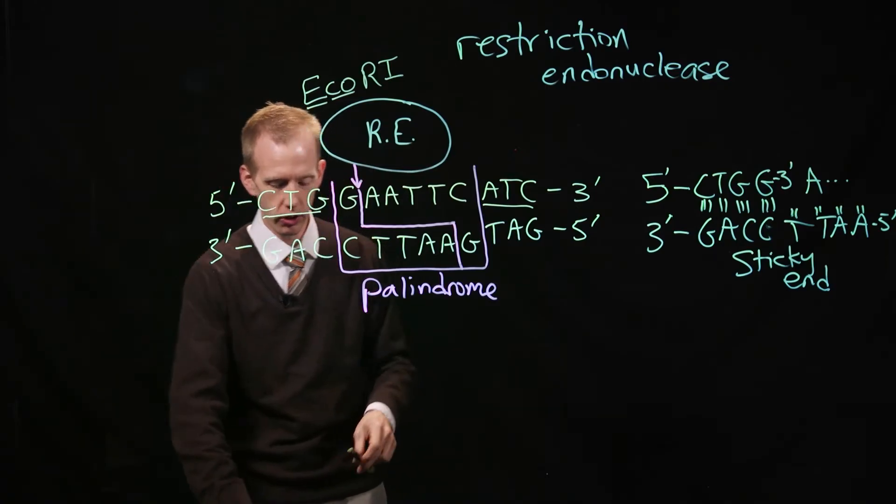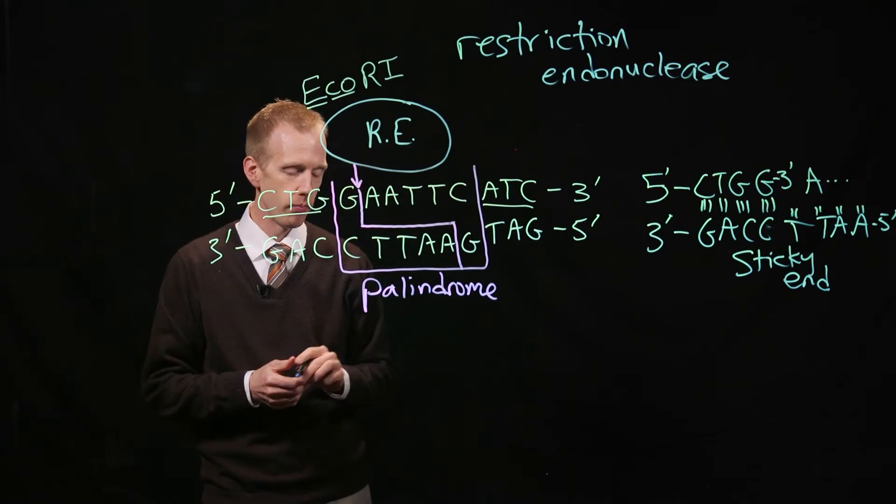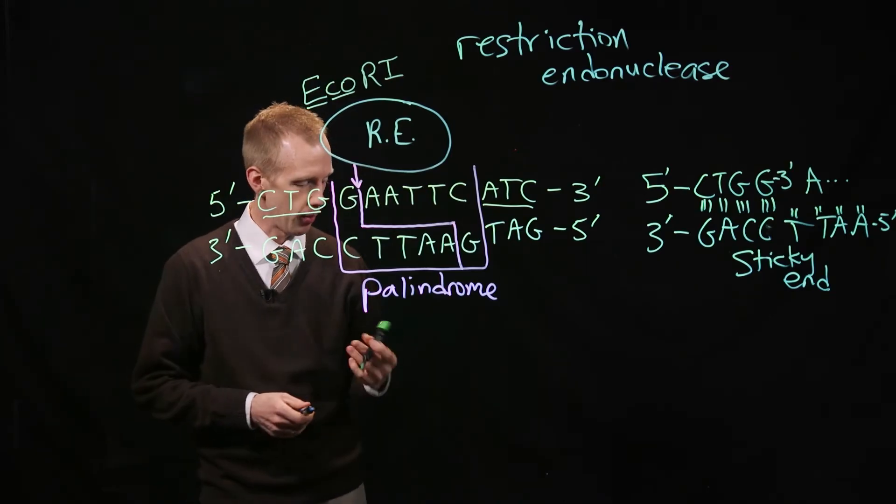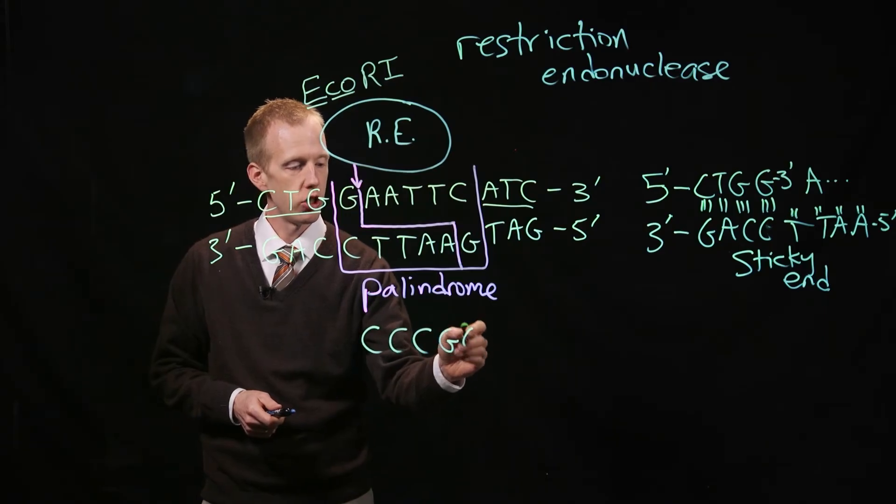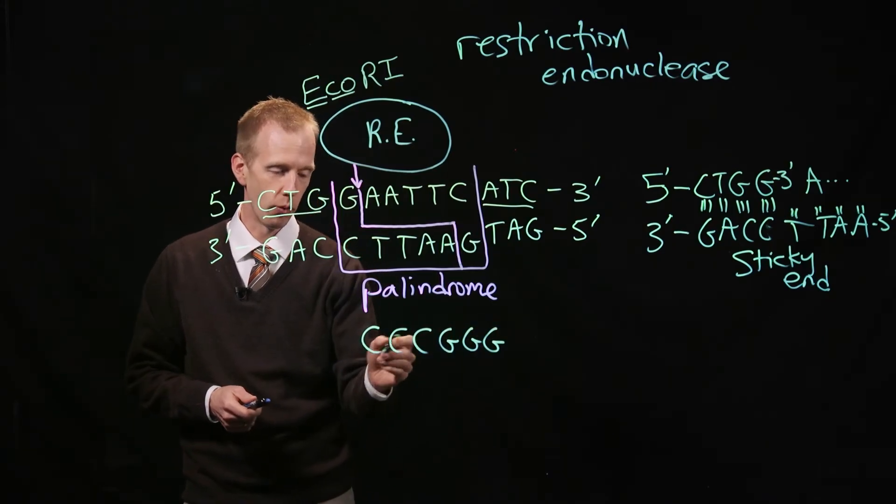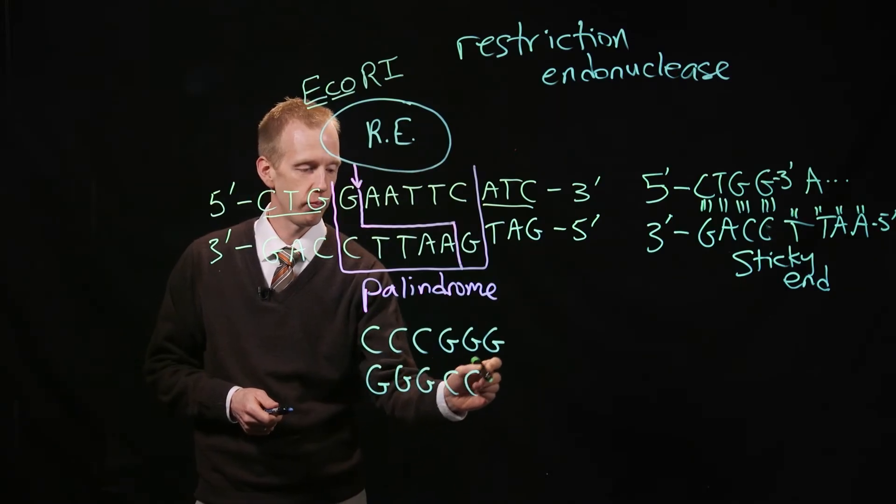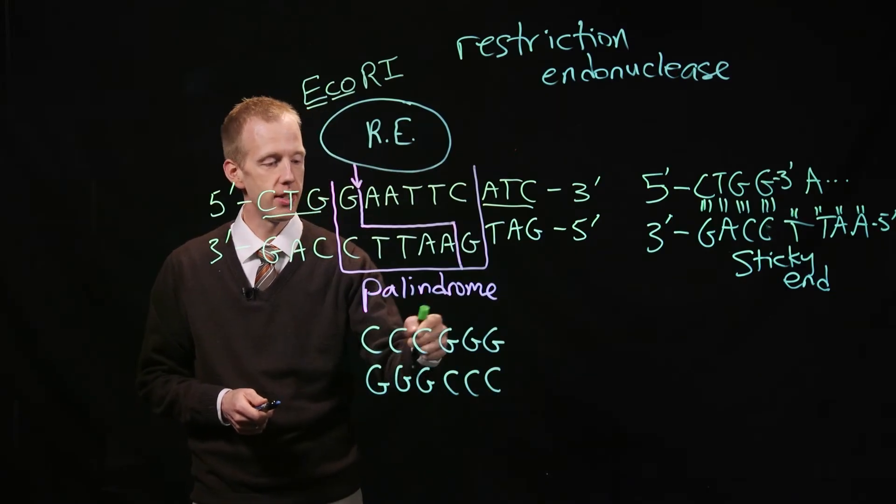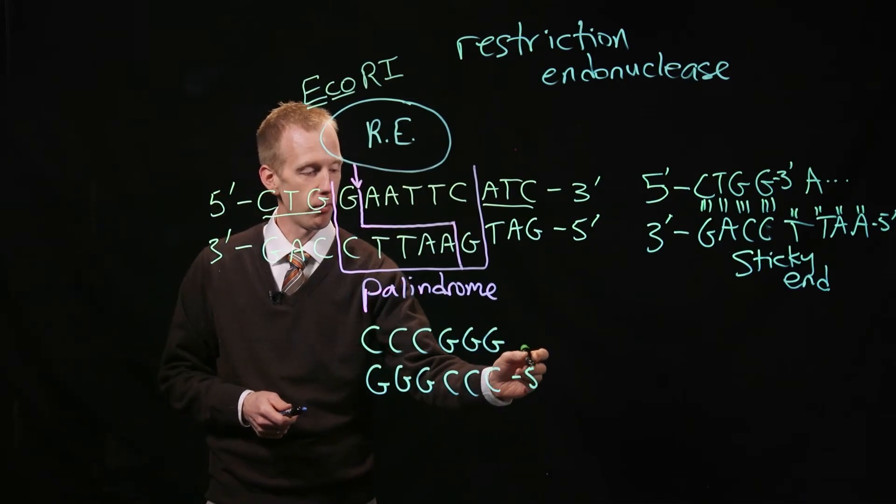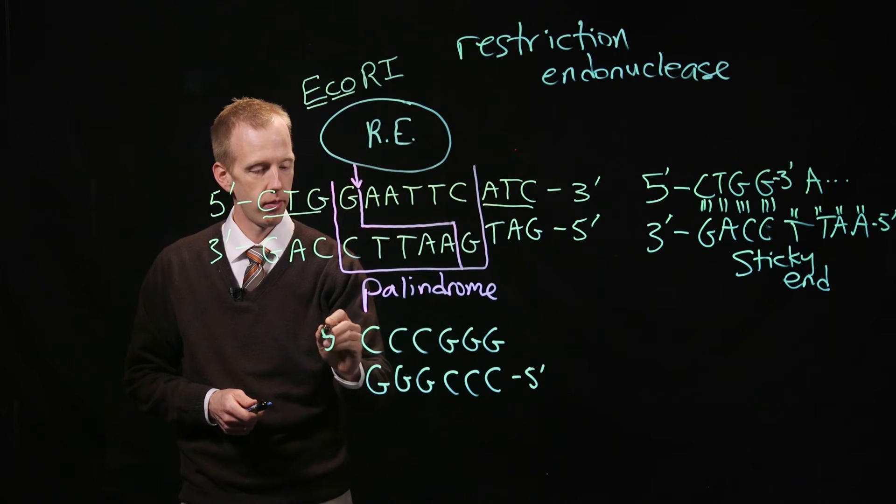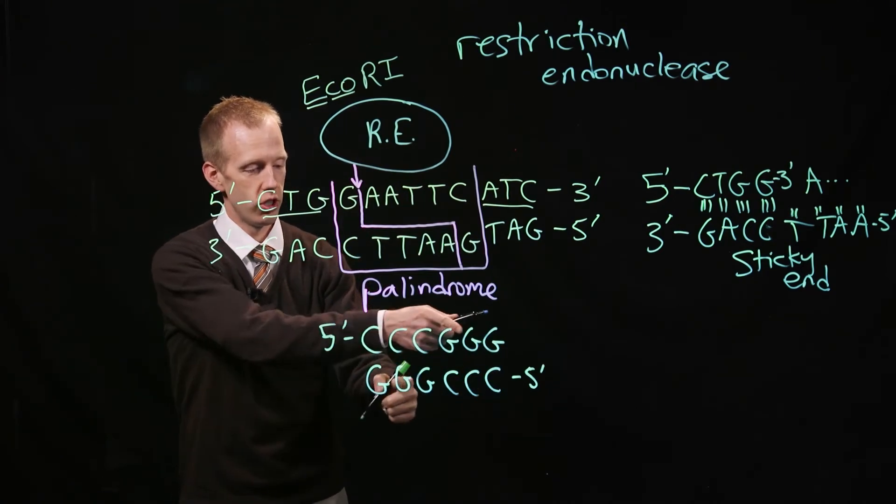There's a different class of restriction enzymes that don't produce sticky ends because they produce blunt ends. We might look at, for example, the DNA sequence C-C-C-G-G-G on one strand, and then the other strand is a palindrome. You can read from left to right C's and G's in the opposite strand, in the reverse polarity from 5' end, reads the same, C-C-C-G-G-G.